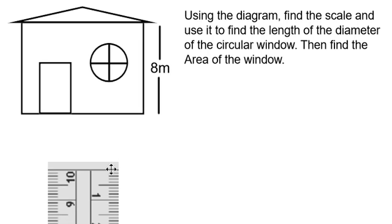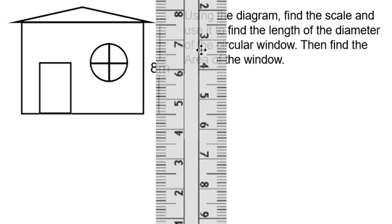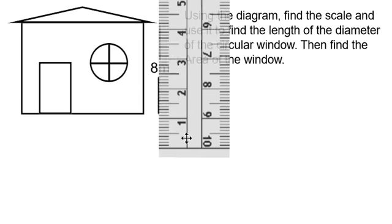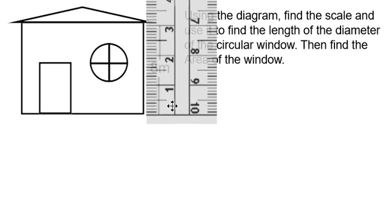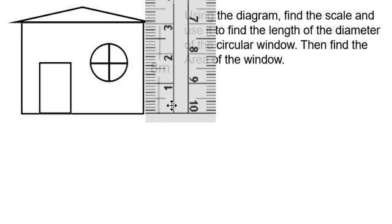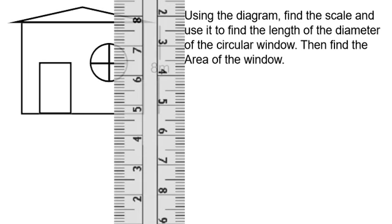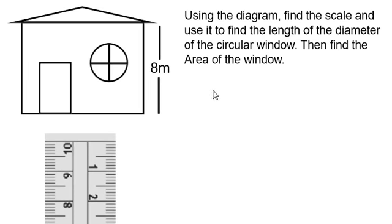The first thing that we have to do is measure the wall of the house. We know that the real measure is 8 meters and the ruler measure is 3.5 centimeters. Therefore, I am able to put those two numbers together and I have a scale for this diagram. 3.5 centimeters ruler represents 8 meters real.